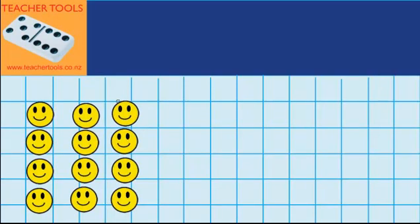You can see down here that I've got an array of smiley faces, and I want to work out how many smiley faces there are in total. If I look this way, I can see that they are arranged in groups of three. So I could use repeated addition to work out how many smiley faces there are. I could go 3 from here, plus this 3, plus the 3 in the next line, plus the last 3.